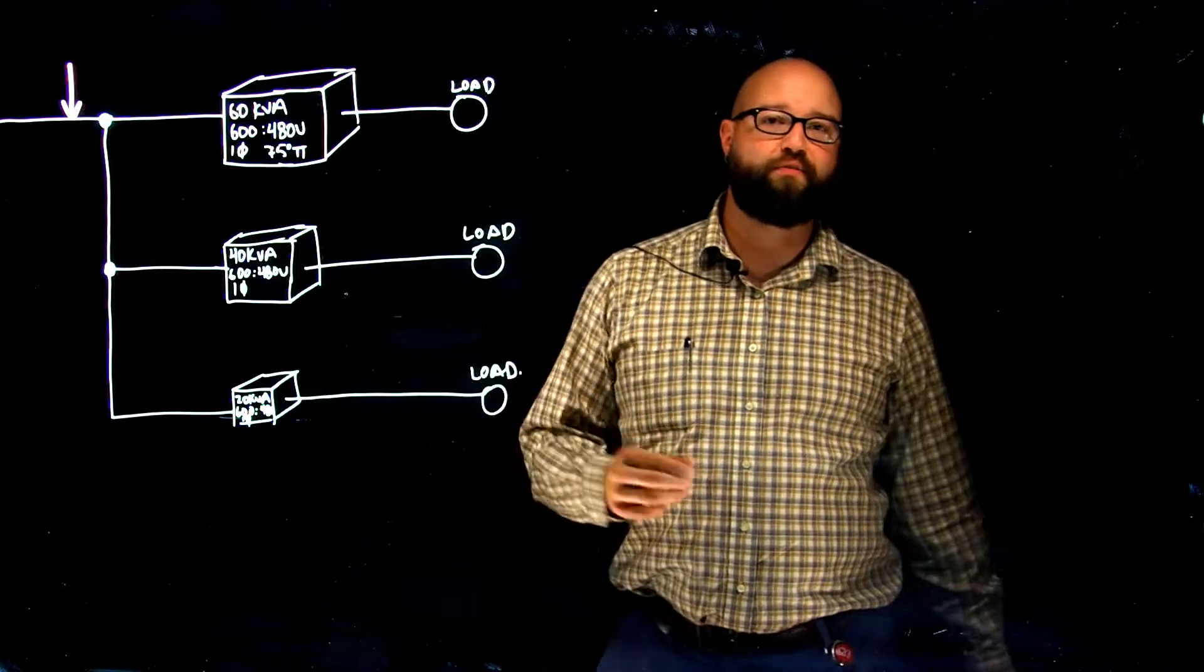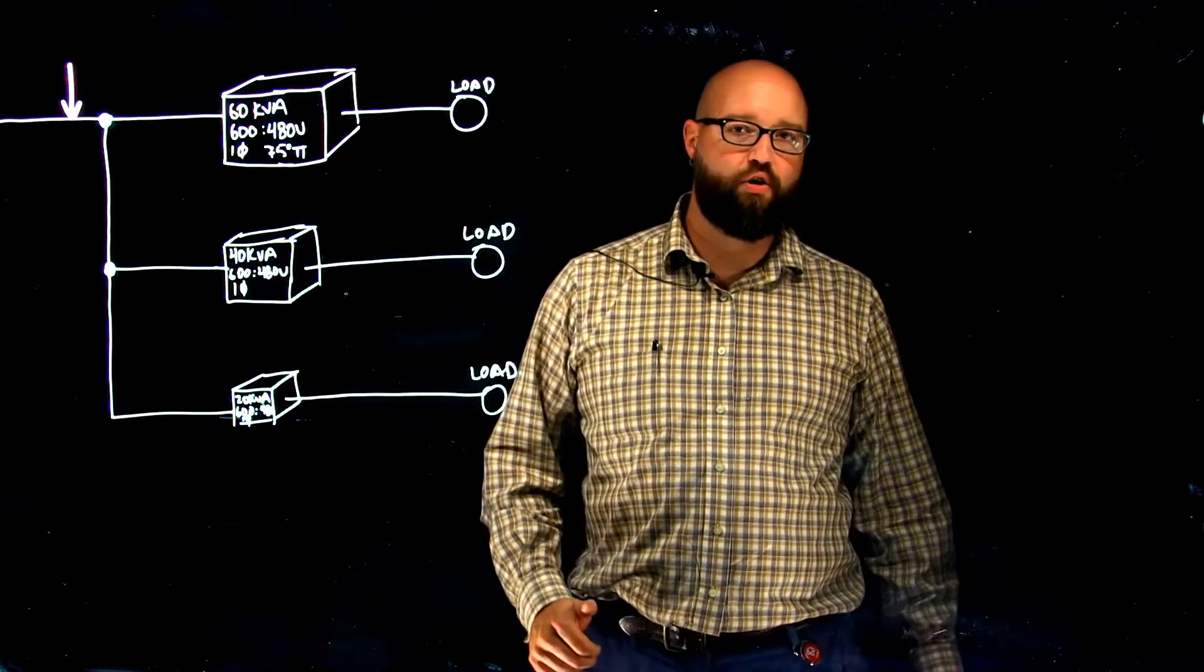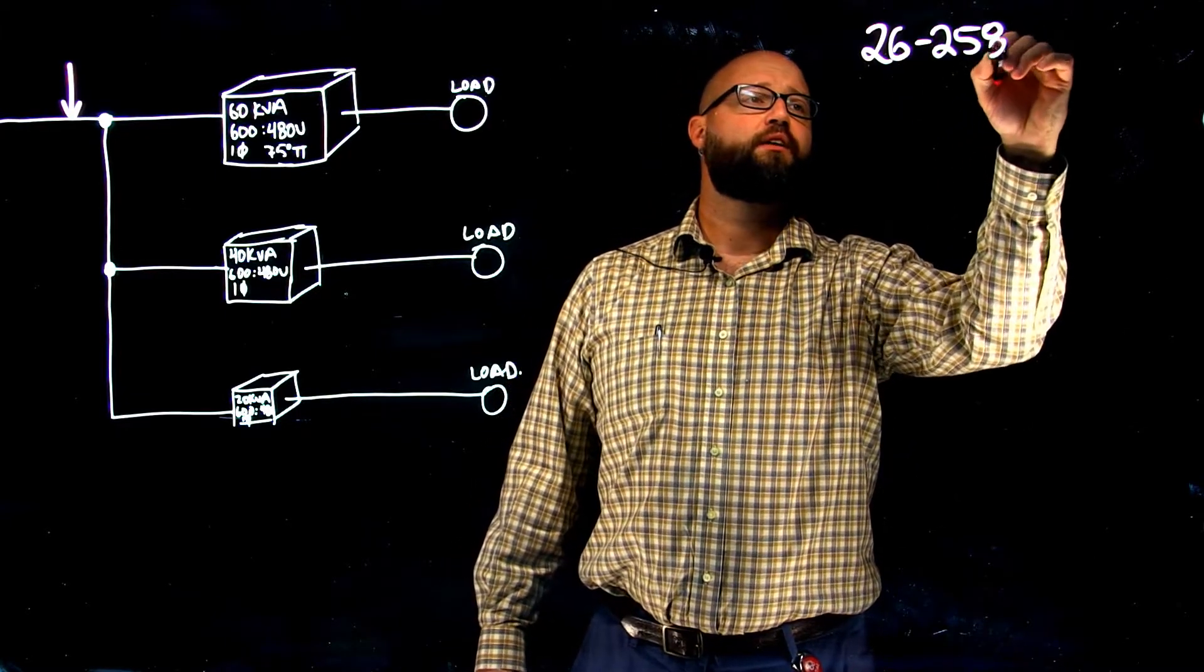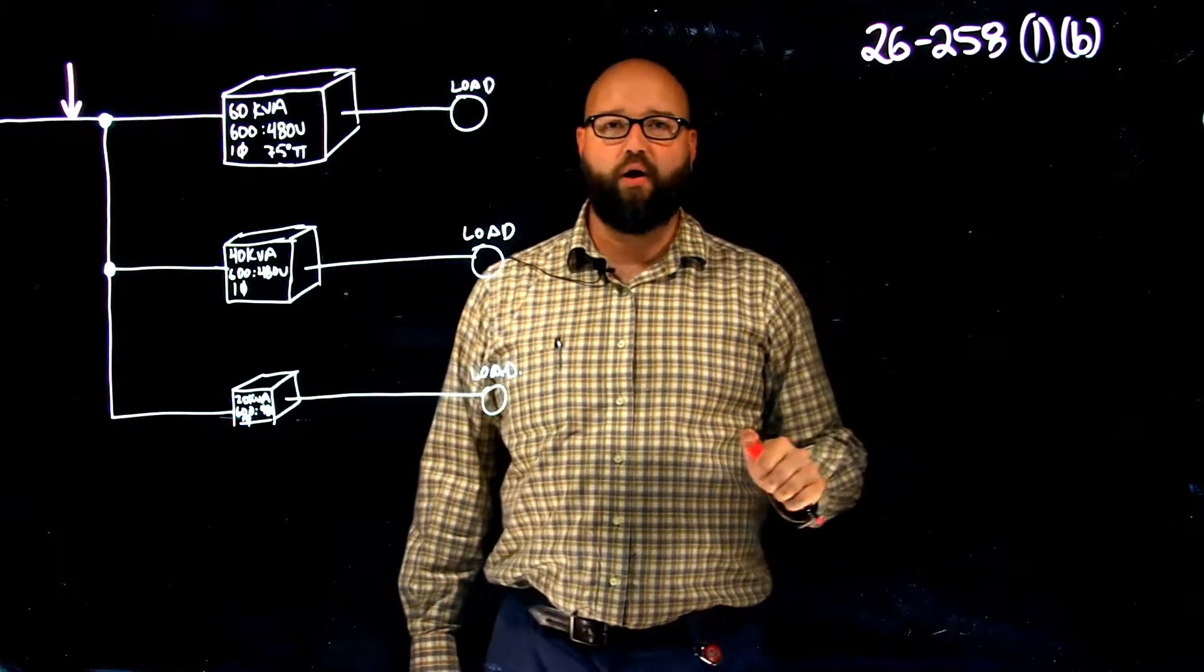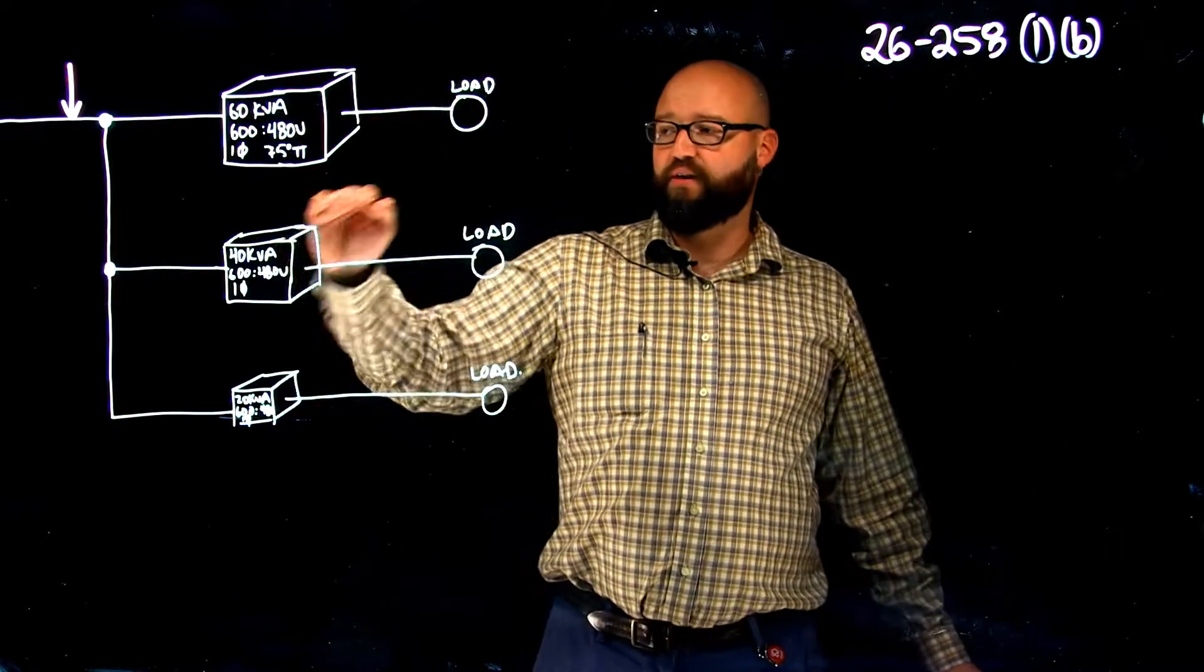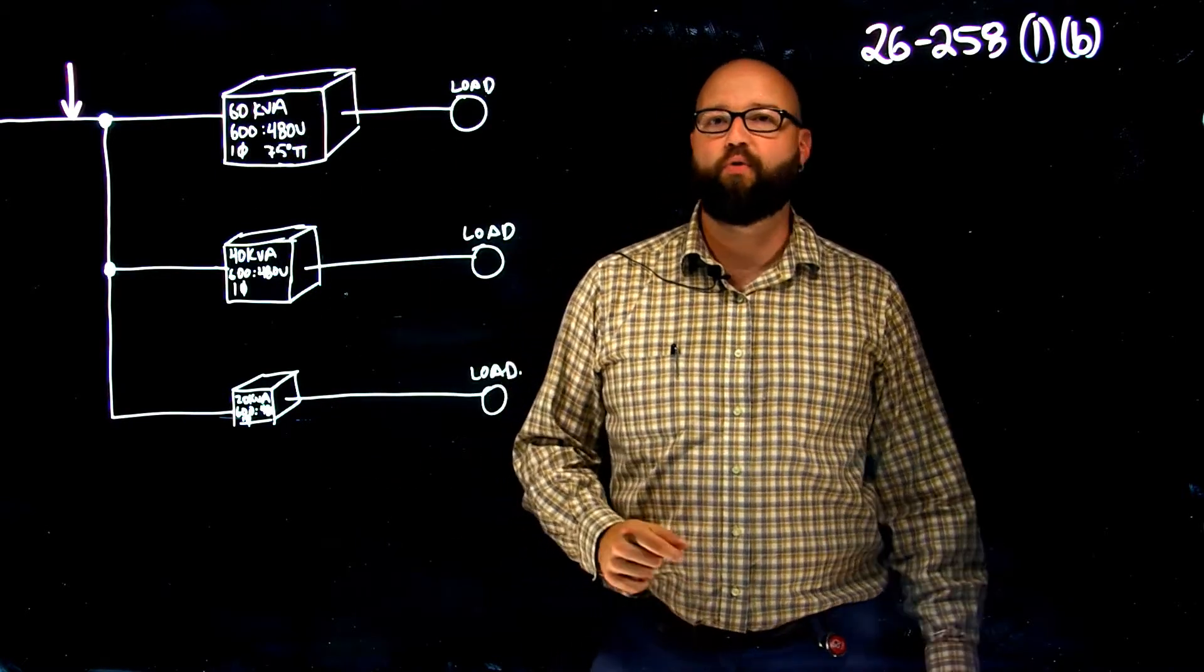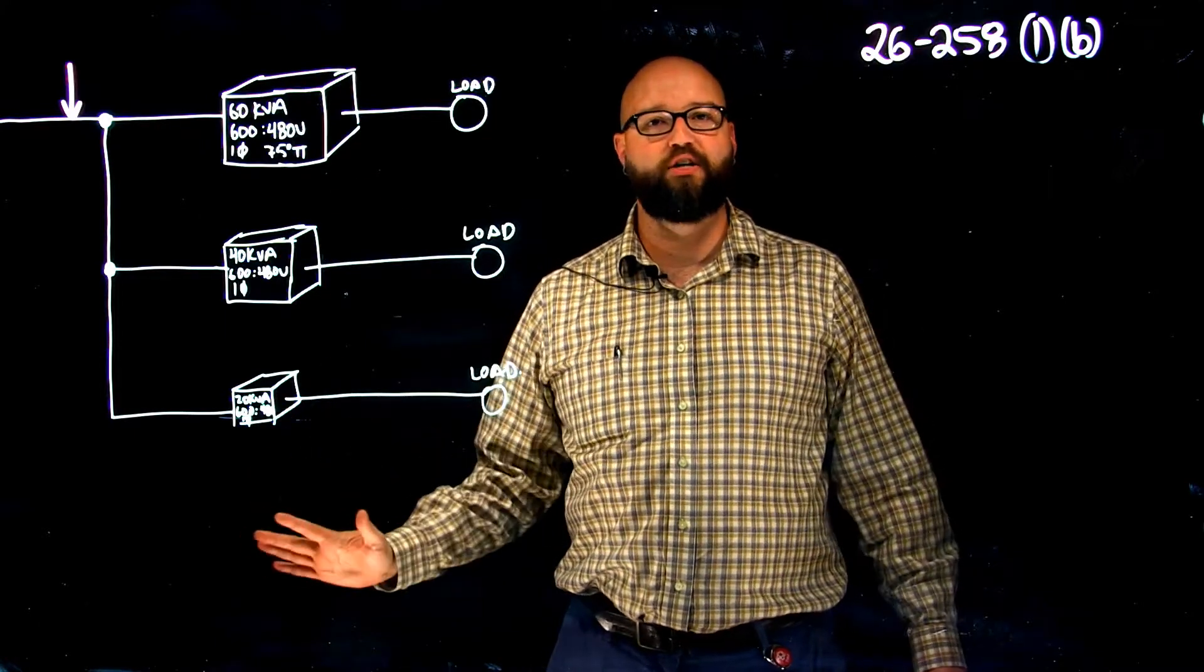We are going to be referencing this out of the 2015 23rd edition of the Canadian Electrical Code with 26-258 Sub Rule 1 Item B in mind for our calculation. I want to point out we have three different size transformers, but all are operating at 600 step down to 480 volt. These are all single phase transformers, so we don't need to worry about root 3 in our calculations.